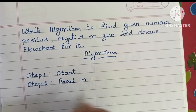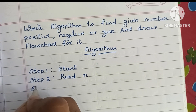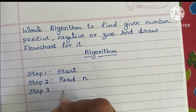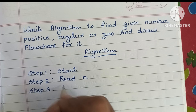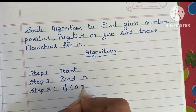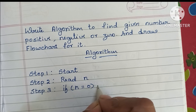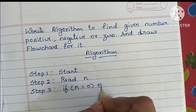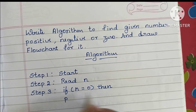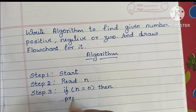Step three: we have to use an if condition. If N value is equal to zero, and this condition is true, then we have to print zero.